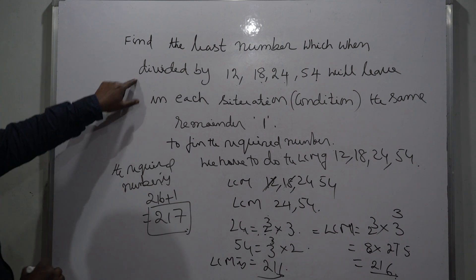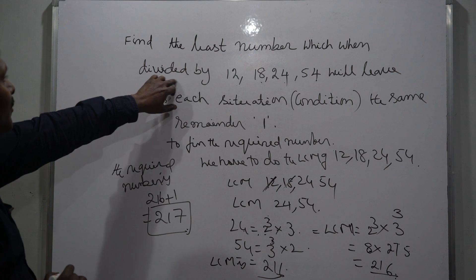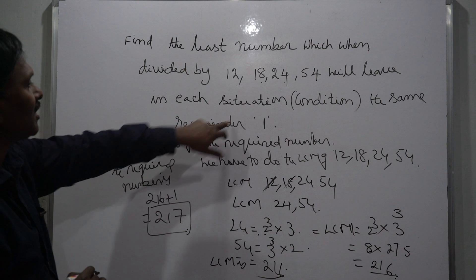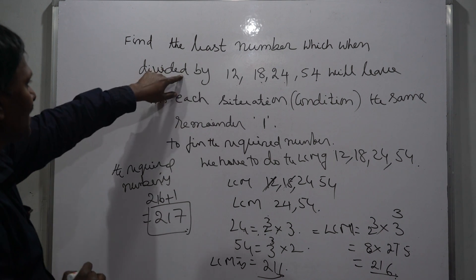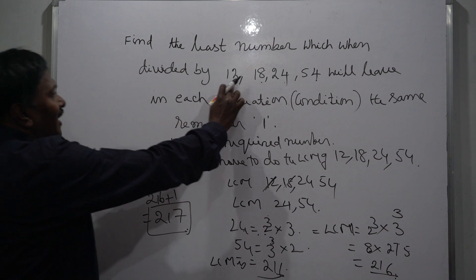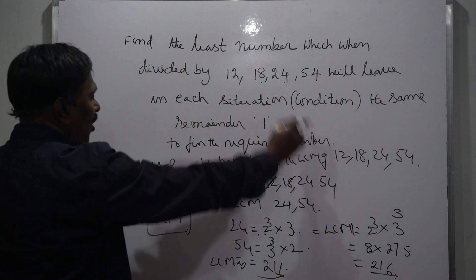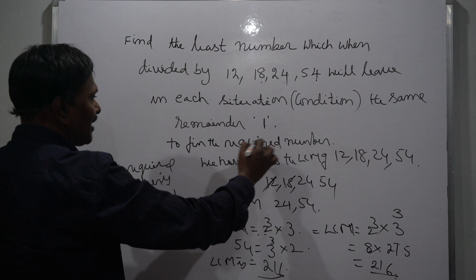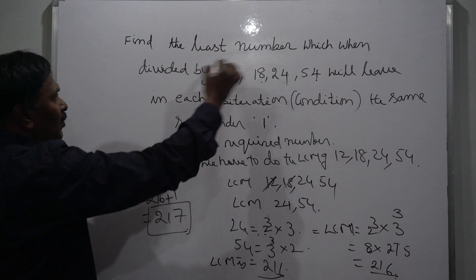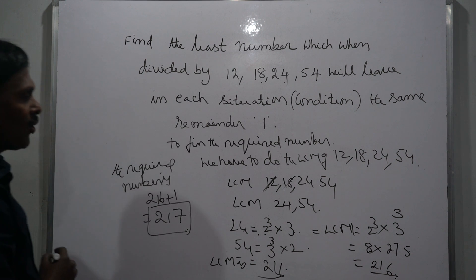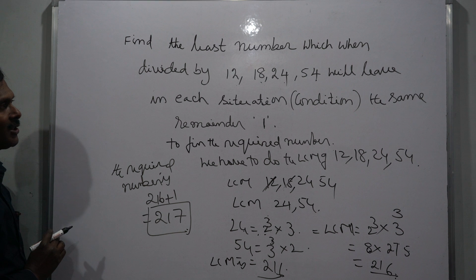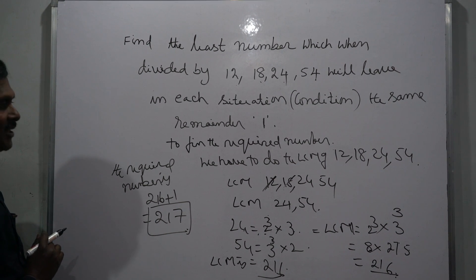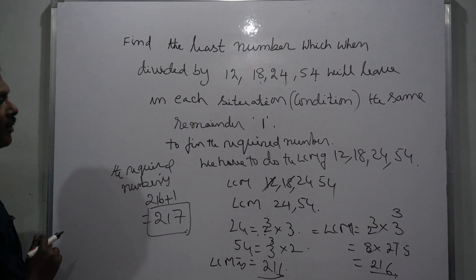To find the least number which divided by 12, 18, 24, 54 will leave in each situation the same remainder 1, it means that first of all we have to find the LCM of these numbers. After that, you have to add the remainder to that LCM, then we will get the required number. I hope you understood well. If you like this video, share it and subscribe to our channel, A Learning Room. Our website is www.alearningroom.com. Thank you very much.